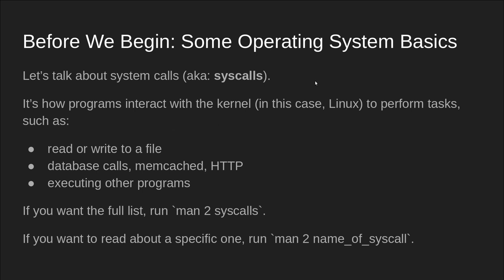Before we get started, let's do a little bit of operating systems basics. Let's talk about something called system calls. Syscalls are how programs, under the hood, interact with a kernel. Anytime you read or write to a file, anytime you talk to the database over the network, anytime you're doing a read and write from memcache, anytime you're talking to your client over HTTP, or executing other programs — those are done via syscalls. If you want the full list on a Linux system you can run man 2 syscalls, and then run man 2 with the name of the syscall to read about each individual one.